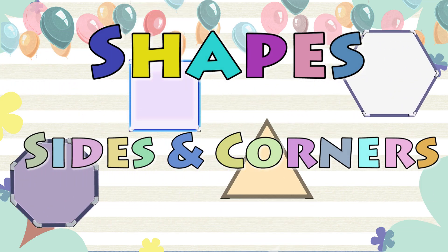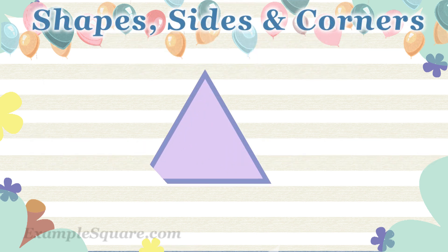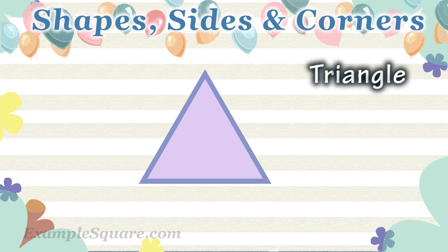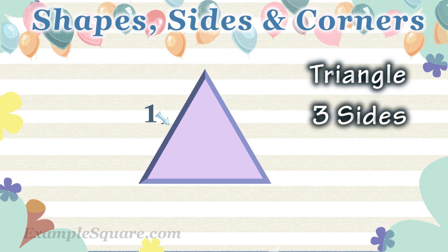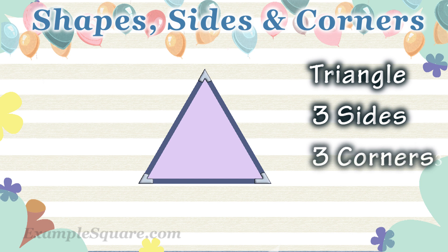Shapes, sides, and corners. What shape is that? Triangle. How many sides does a triangle have? A triangle has three sides: one, two, three. How many corners does a triangle have? A triangle has three corners: one, two, three.